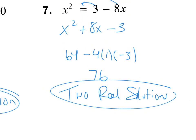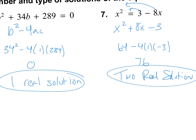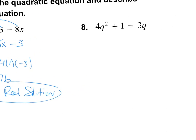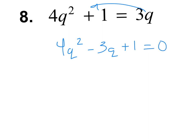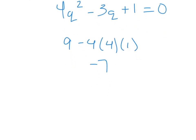For the last one, moving the term over gives 4q squared minus 3q plus 1 equals 0. Computing the discriminant — b squared minus 4 times a times c — gives 9 minus 4 times 4 times 1, which equals negative 7. The fact that you get a negative number tells us that the solutions are imaginary. Remember: positive discriminant means two real solutions, zero means one real solution, and negative means imaginary solutions.